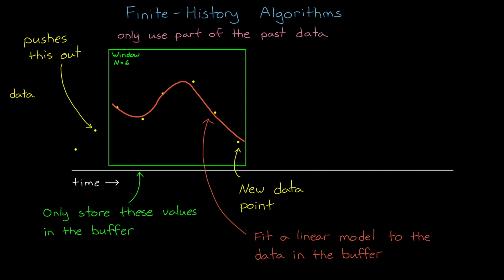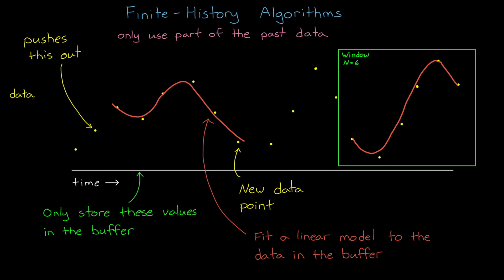We move that window of buffered data forward in time and therefore only base the updated model on the most recent data. So if the system is in one state in the past and we estimate a model of the system, then later in the future, when the system has transitioned to a new state, none of that past data will influence the new model.